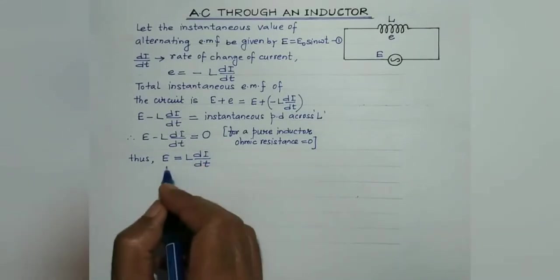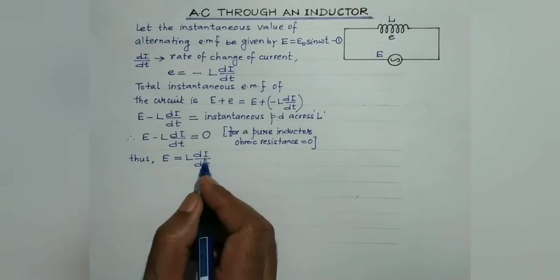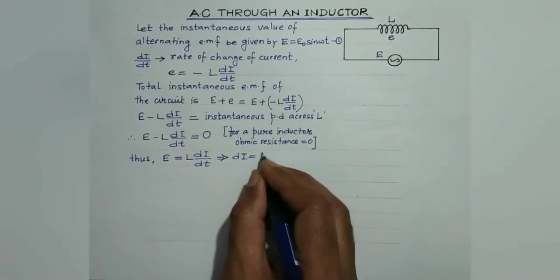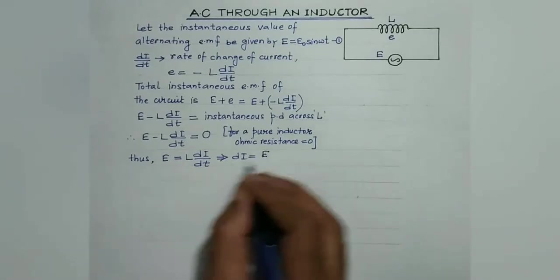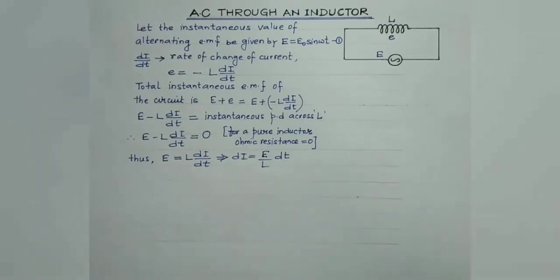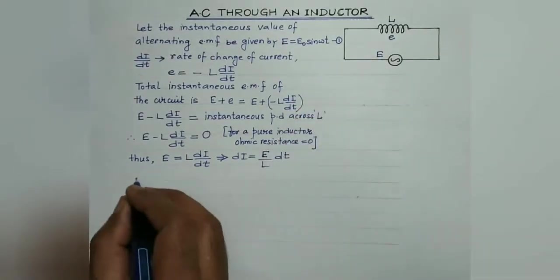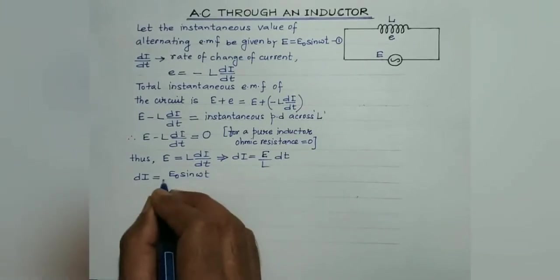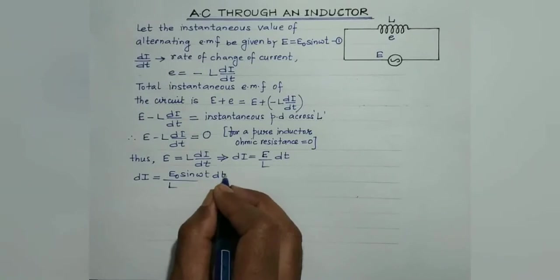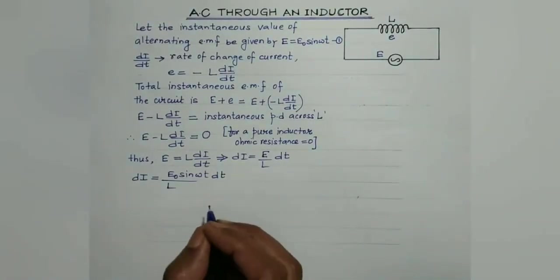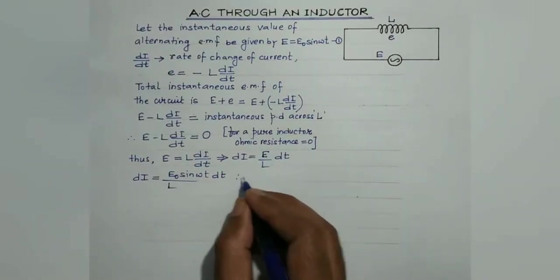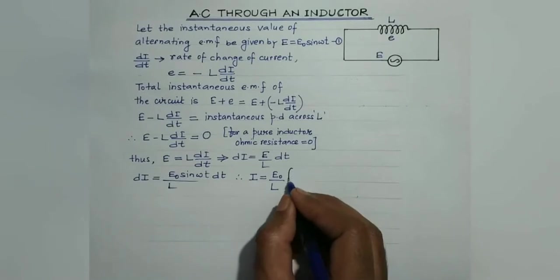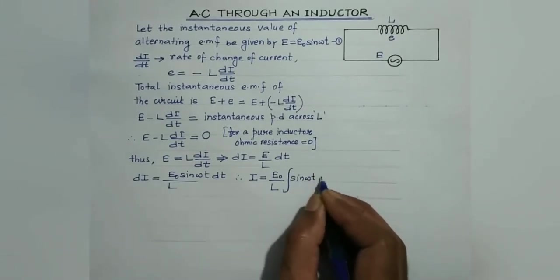From this equation we need to determine the expression for instantaneous current. We can write dI equals E/L into dt. Substituting E from equation 1, we get dI equals E₀ sin ωt divided by L, times dt. In order to obtain the current, we need to integrate it. So on integrating, I equals E₀/L times the integral of sin ωt dt.